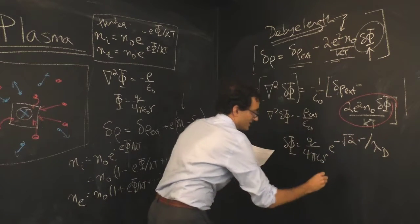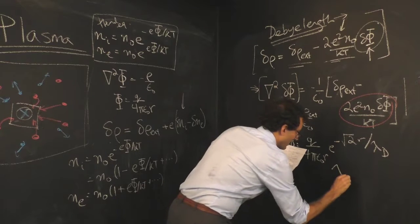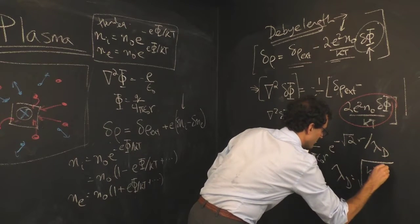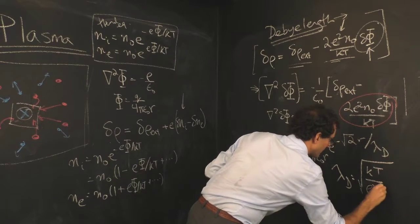After the person who first understood and mathematically defined this process. Lambda d you can write out as equal to the square root of kT over e squared n0.